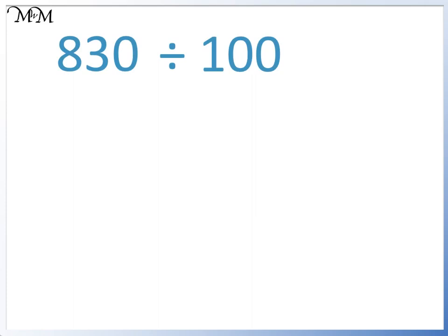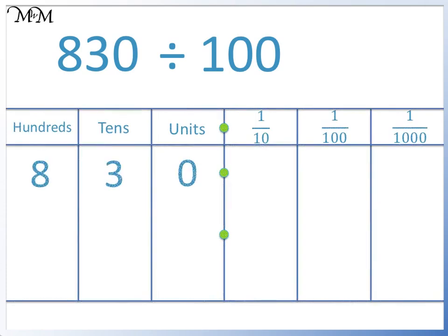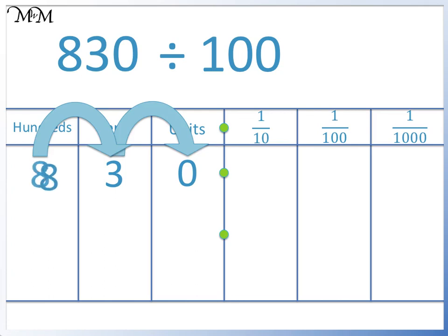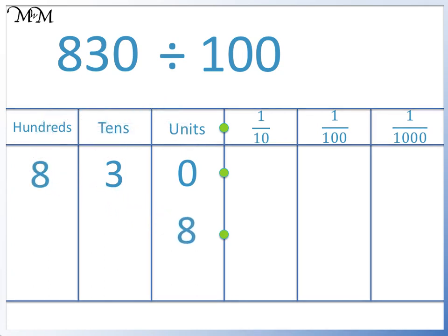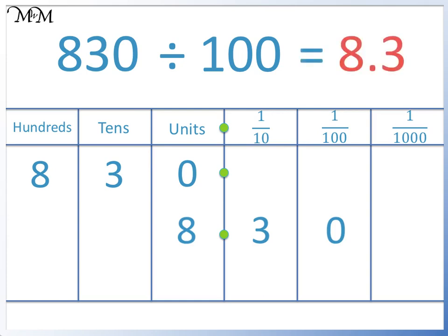830 divided by 100. We are dividing by 100, so we will be moving each digit two places to the right. We'll start by moving the 8: 1, 2. We have moved the 8 to the units column. The next two digits follow. We move the 3 to the tenths column, and we move the 0 to the hundredths column. We have 8.30. Because there are no other digits after the 0, we can ignore it. 830 divided by 100 equals 8.3.